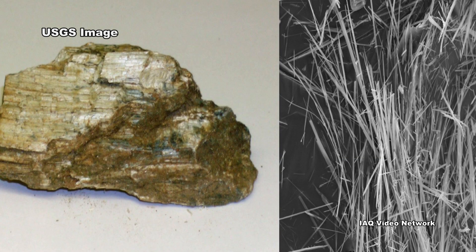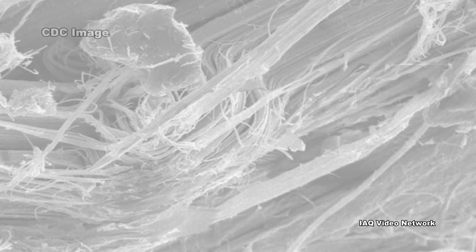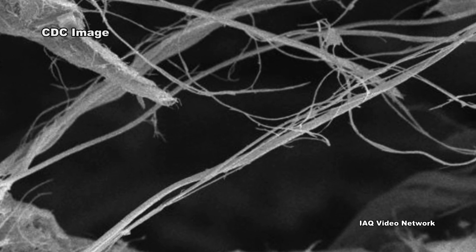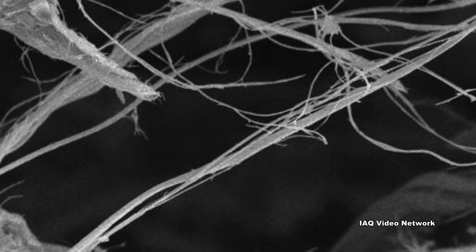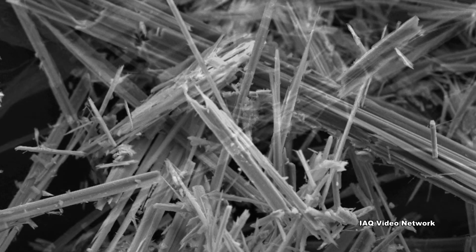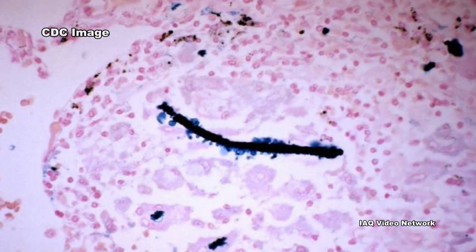Asbestos is the name given to a group of six different fibrous minerals that occur naturally in the environment. Asbestos fibers are too small to be seen by the naked eye. They do not dissolve in water or evaporate. They are resistant to heat, fire, and chemical or biological degradation. Prolonged inhalation exposure to asbestos fibers can cause mesothelioma, asbestosis, and lung cancer.